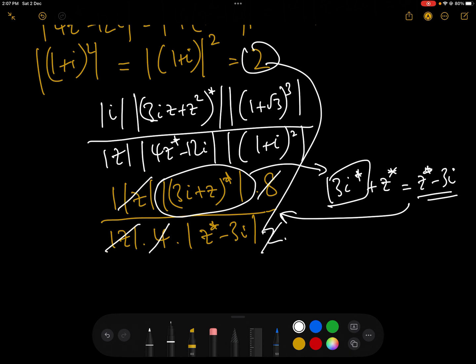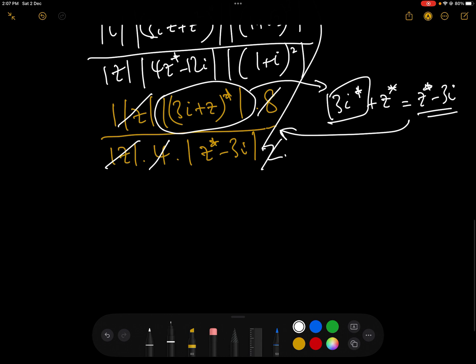We can cancel out the mod z, and all that leaves us with is z conjugate minus 3i modulus over modulus of z conjugate minus 3i, which equals 1. And that is the answer.